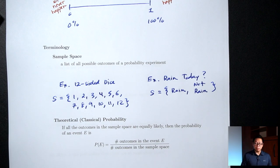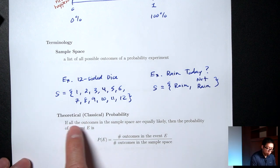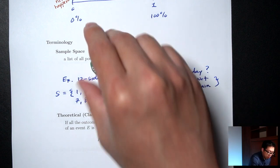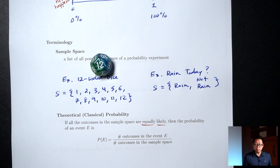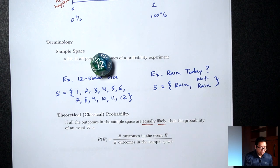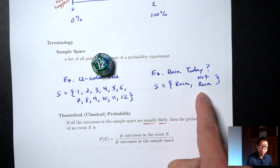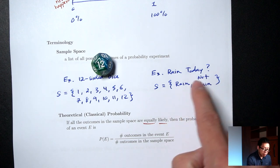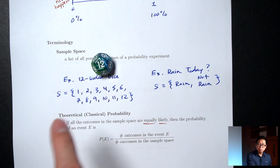So how do we compute probability? The formula here is for what's called theoretical or classical probability, and it only applies when the outcomes in the sample space are equally likely. For the dice example, if it's a fair die, each number is equally likely — so this formula applies. For the rain situation, rain and not rain are not equally likely, especially in California during a drought, so this formula would not apply there. It applies to the dice situation.